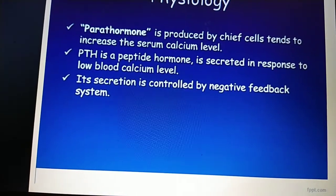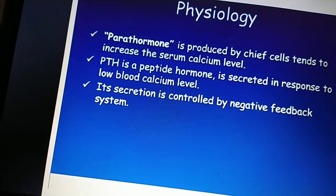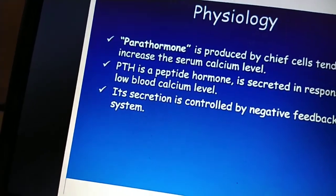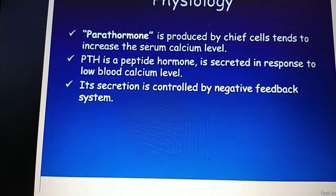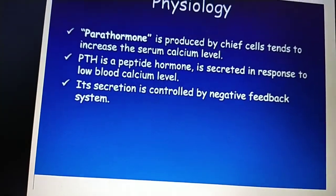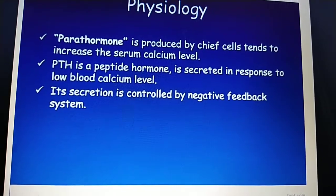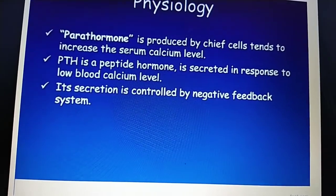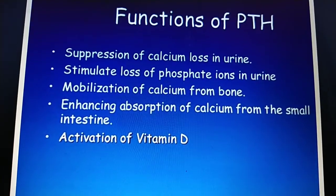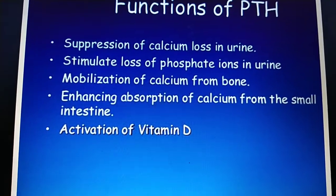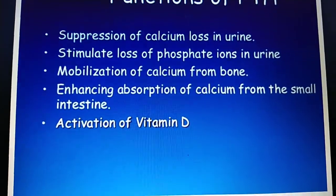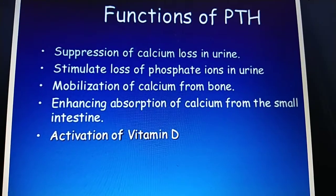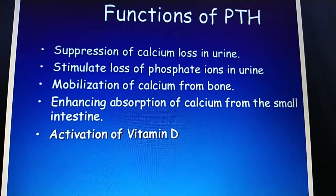Parathyroid hormone increases absorption of calcium from the gut, mobilizes calcium from bone, and increases calcium reabsorption from the renal tubules, thereby maintaining blood calcium levels. Blood supply is mainly from the inferior and superior thyroid arteries; venous drainage by the superior, middle, and inferior thyroid veins. Functions of parathyroid hormone include: suppression of calcium loss in urine, stimulation of phosphate loss in urine, mobilization of calcium from bone, enhancement of calcium absorption from the small intestine, and activation of vitamin D.